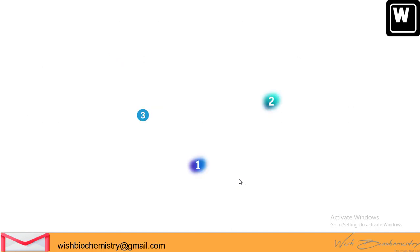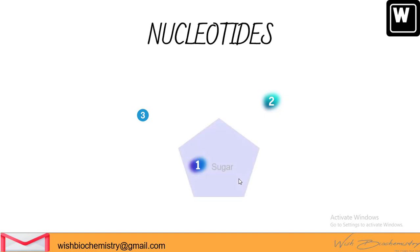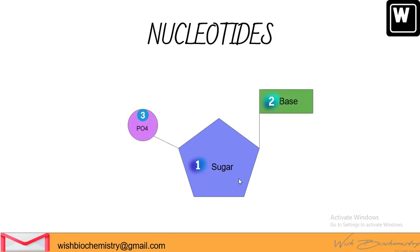For the nucleic acid structure, we should understand the basic structure of a nucleotide. The basic structure is made up of three important groups: sugar, nitrogenous base, and phosphate. We will discuss these groups one by one.